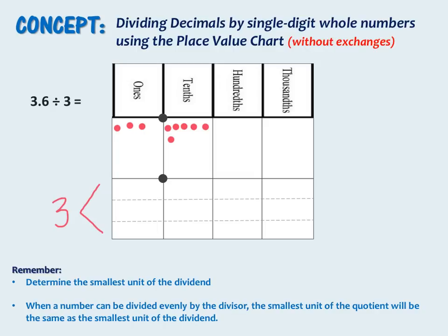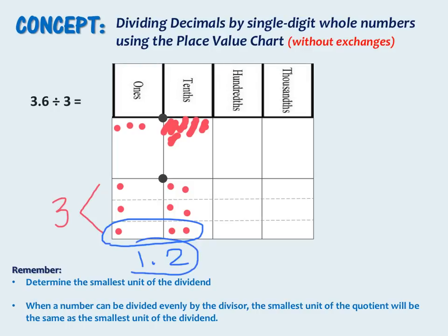Now we will divide each place value into 3 equal groups beginning with the ones place. We have 3 ones, so we do have enough to separate into 3 equal groups. Now let's go to the tenths place — we have 6 tenths to separate into 3 groups, giving 2 tenths in each group. To find our answer, we look to see how many are in each row — in each row you will see 1 and 2 tenths. So our answer is 1 and 2 tenths.